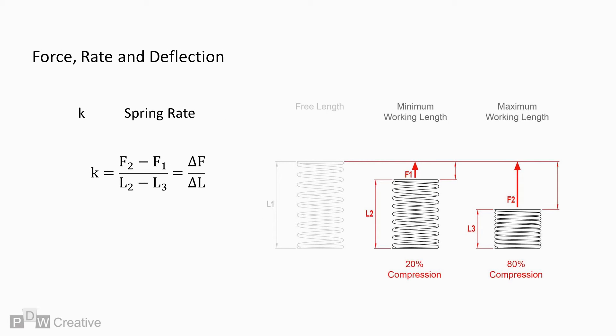The spring rate is a product of force over length. The change in force across working lengths is divided by the change in working lengths, and this gives us a spring rate of 0.443 N per mm.